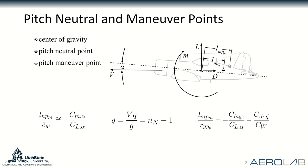The hat notation indicates that these moments are non-dimensionalized by the pitch radius of gyration rather than the mean chord. The Q-hat term relates to how the pitch rate is non-dimensionalized. For more information on that, you can check out the paper. This is all originally done by Phillips, and we wanted to carry this to the roll and yaw axes.